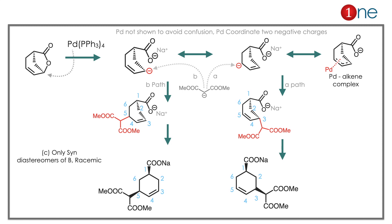The product will be racemic because both enantiomers have equal probability. If you redraw nicely with sodium to balance charges, you have a 6-membered ring with an alkene. Both product possibilities are mirror images of each other — the product is racemic. Ring opening occurs via palladium in the same plane, so both groups are above the plane. Key learnings: palladium catalyst coordinates the negative charges and facilitates C–C bond formation, like other organometallic chemistry.